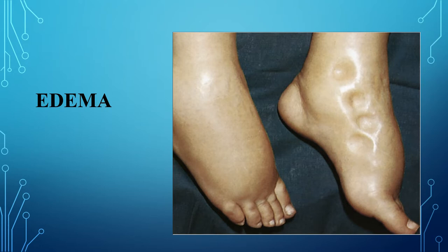Edema is one of the most common forms of hyperhydration. It is a typical pathological process accompanied by accumulation of excess fluid in the interstitial space as a result of disturbance of water balance between blood and tissues. Sometimes there is accumulation of fluid inside the cell, called intracellular edema. Accumulation of fluid in body cavities is called hydrops: in the abdominal cavity — ascites; in the pleural cavity — hydrothorax; in the pericardial cavity — pericardial effusion; in the ventricles of the brain — hydrocephalus.